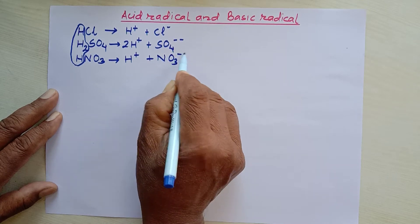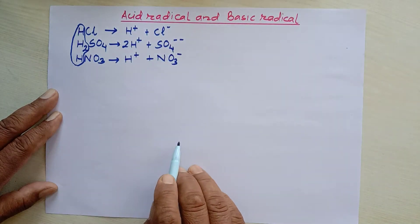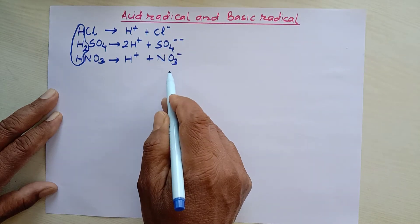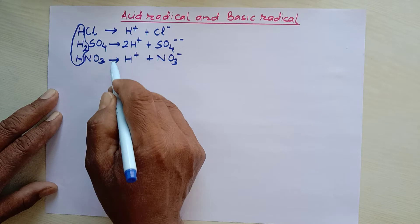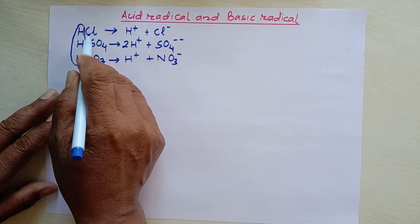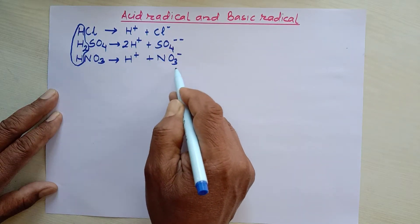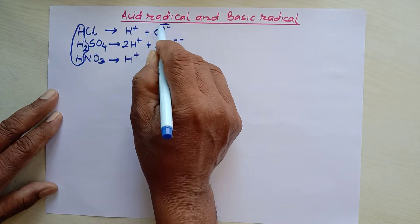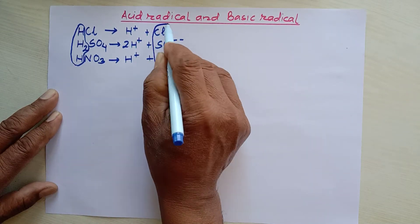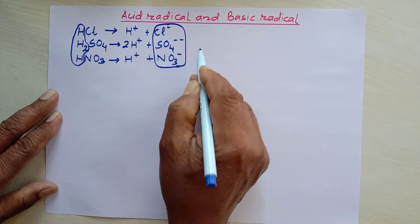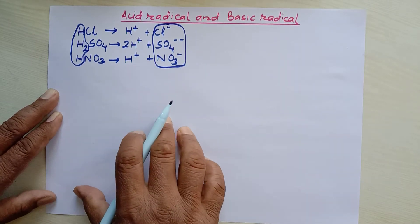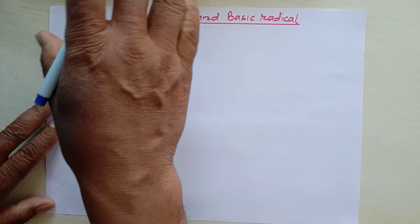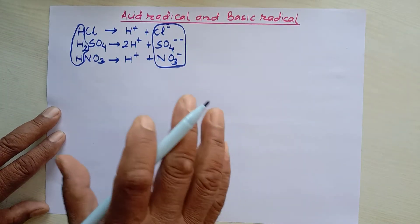Now what is our concern — we are talking about acid radicals. Look at these radicals: chloride, sulfate, nitrate. These radicals are actually combined with hydrogen to form acid. Since these combine with hydrogen to form acid, that's why these are called acid radicals.